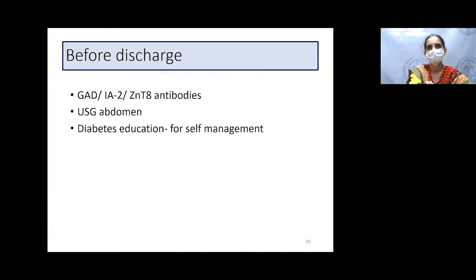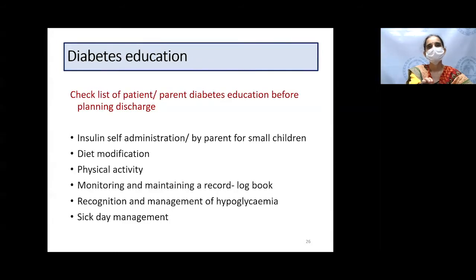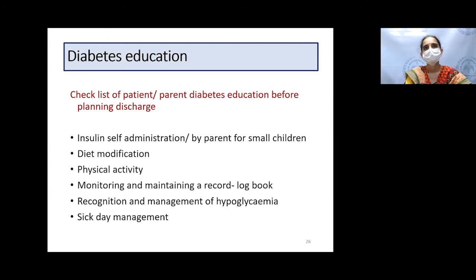Before discharging any patient admitted for glycemic control for type 1 diabetes, check their antibodies, do an ultrasound abdomen to rule out chronic pancreatitis, and ensure they have learned diabetes self-management skills. Key skills include: insulin self-administration (by older children and adults; by parents only for children under 12), diet modification, physical activity, monitoring and maintaining a logbook, recognition and management of hypoglycemia, and what to do when sick.